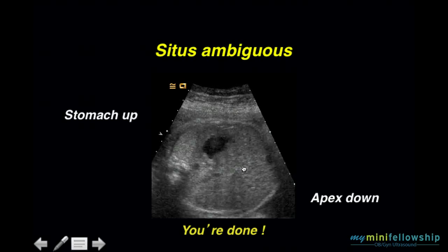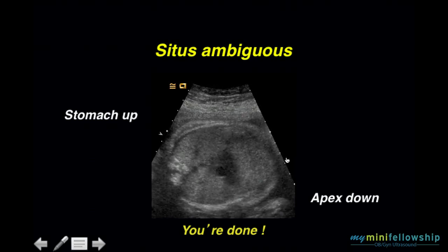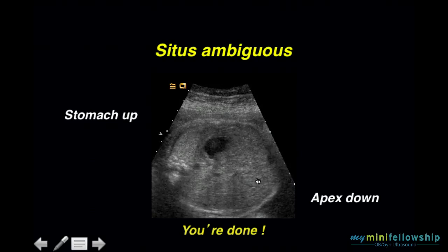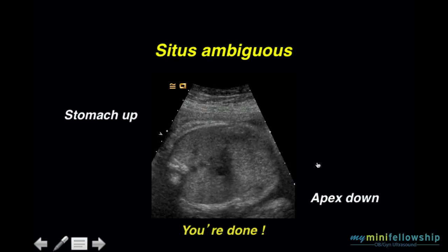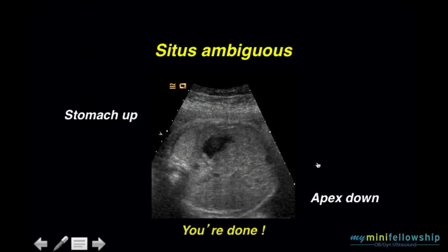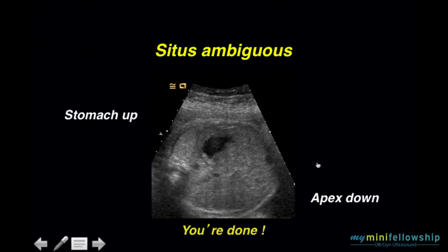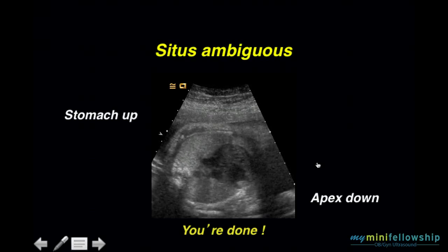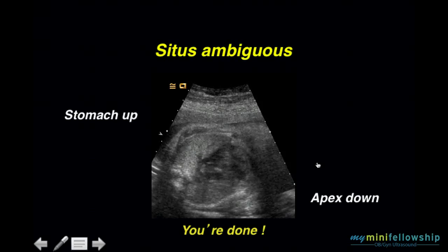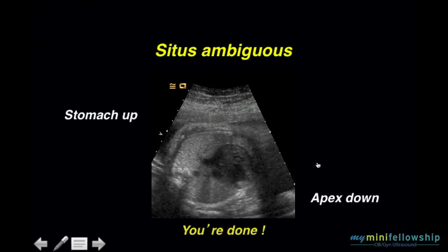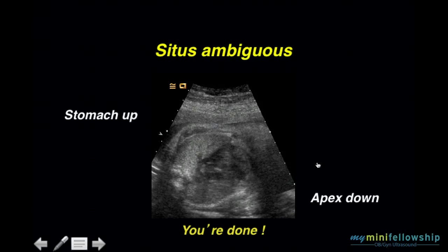I also don't need to point out, hopefully by now, that the diameter of these two ventricles is quite different. To be perfectly honest, because the situs is ambiguous, I don't know if that's the left ventricle or the right ventricle — it doesn't matter. We didn't like our comparison of diameters. We're done. We noted that the stomach and the apex were on opposite sides. We're going to refer that patient for an echocardiogram.